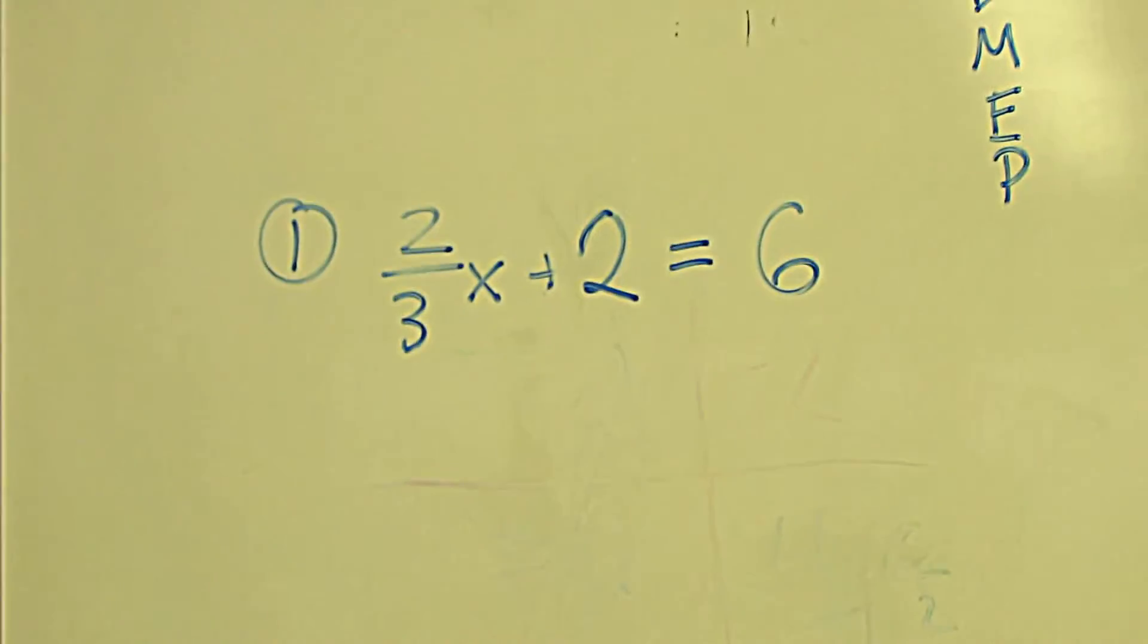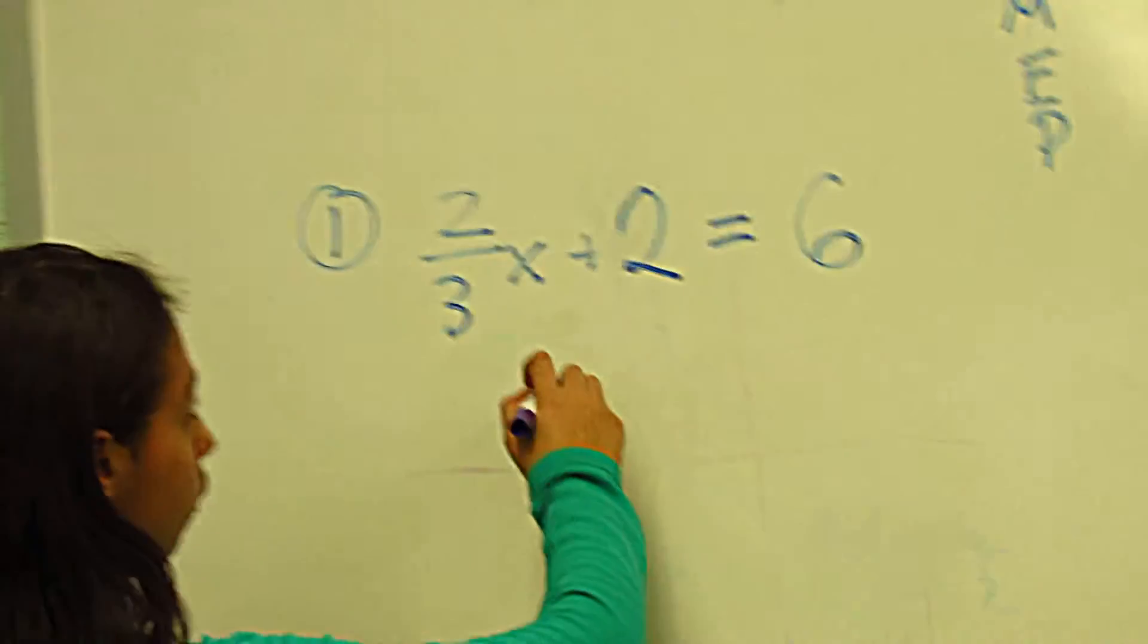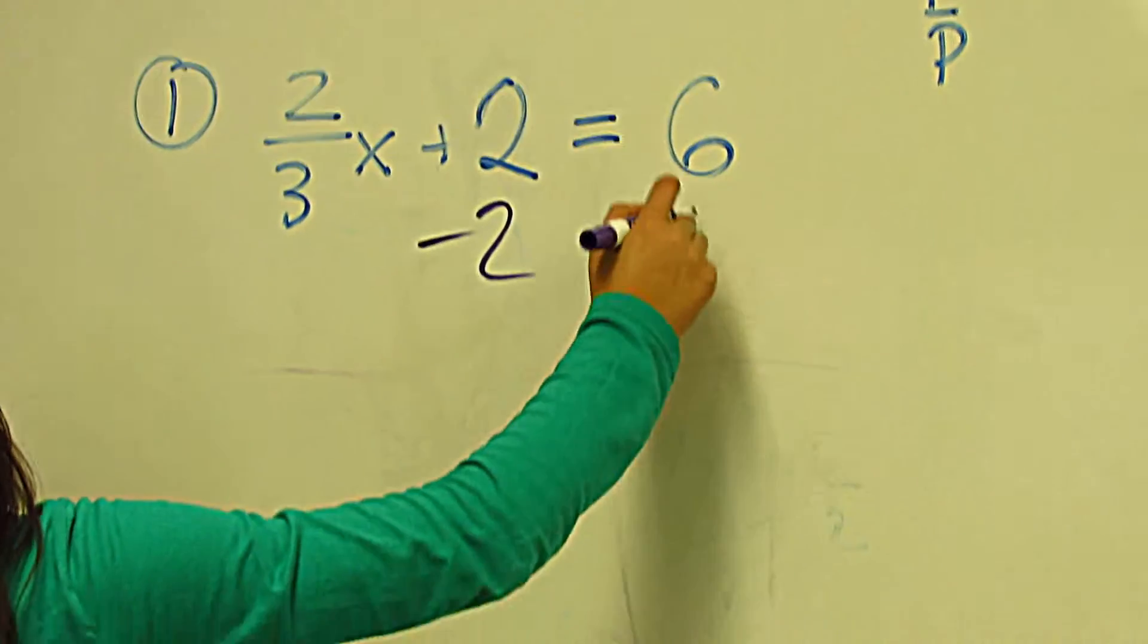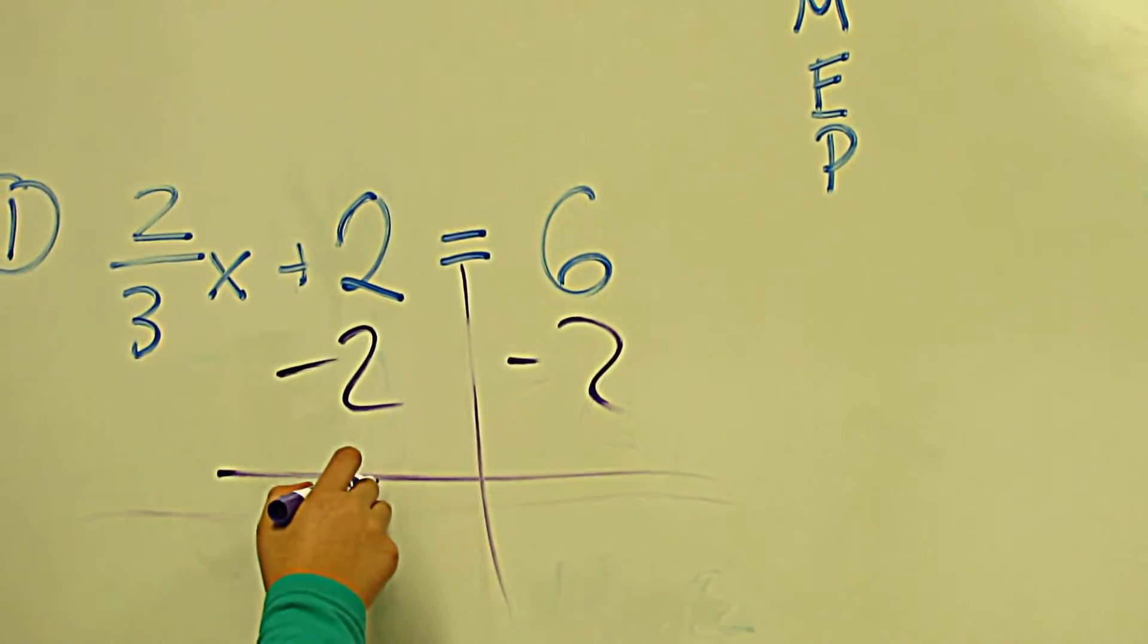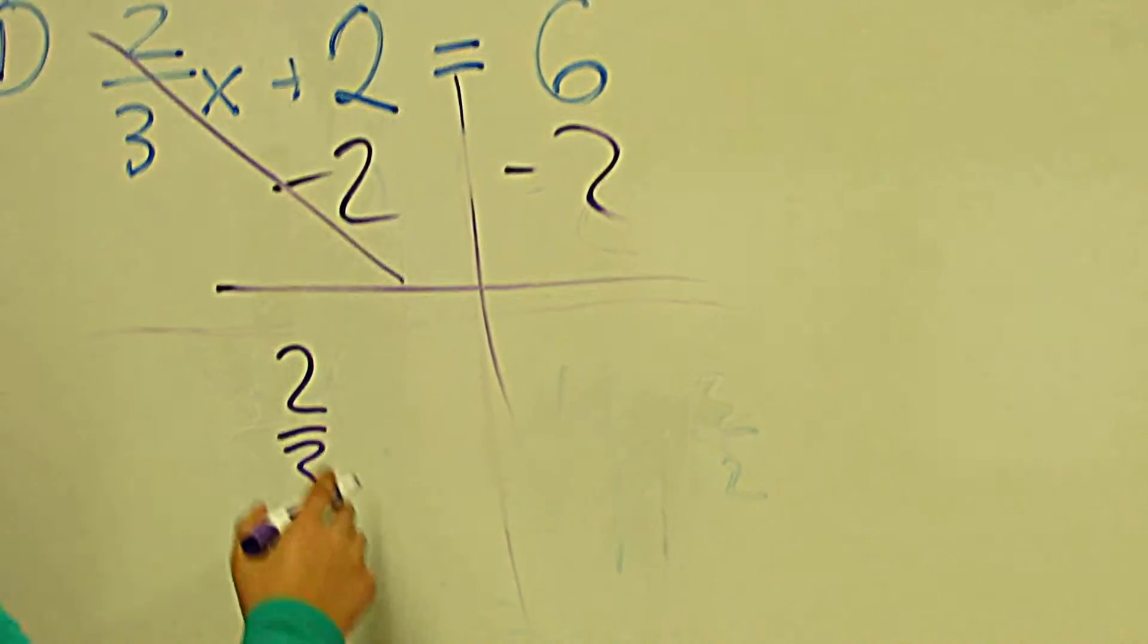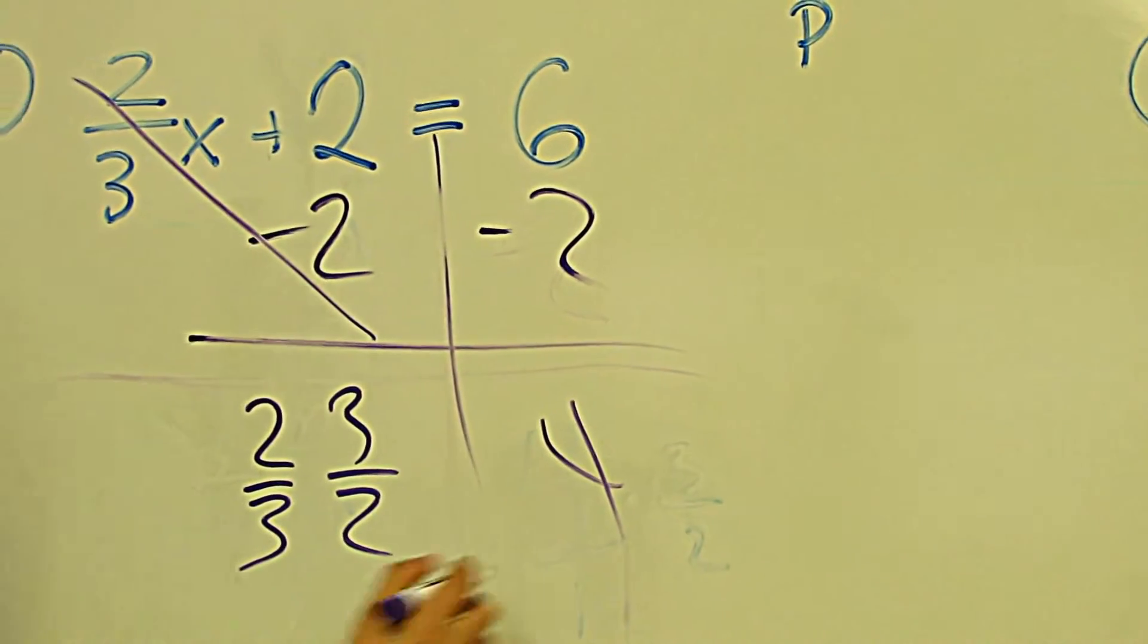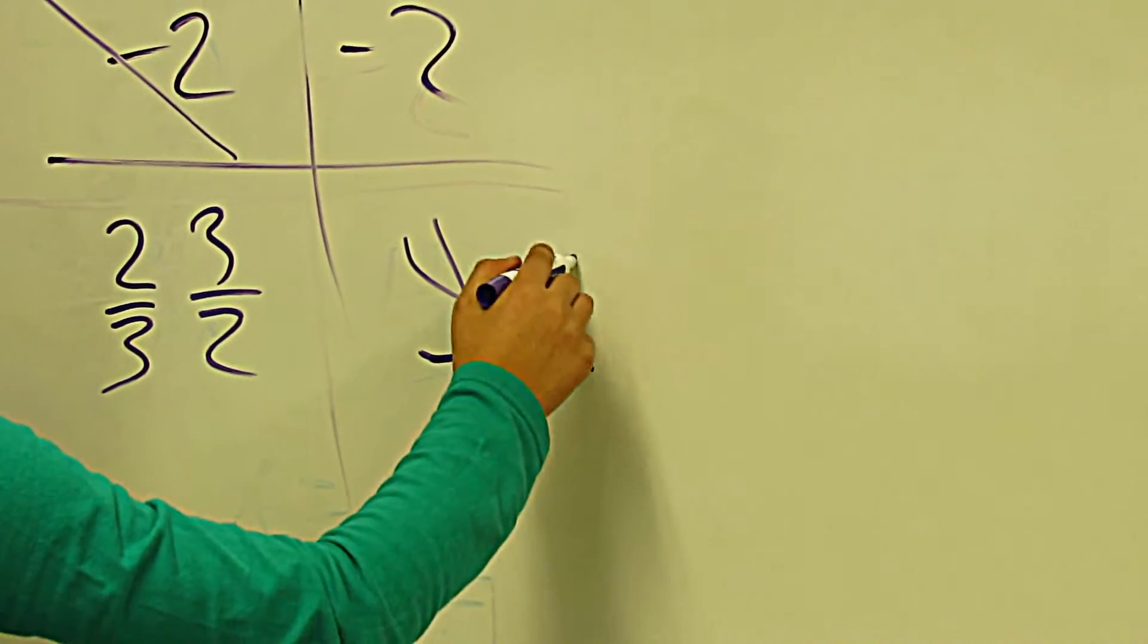First, you've got to do negative two on both sides, because we're doing a side map and we're going to start working backwards. This crosses out, that will be two over three. We're going to do a reciprocal, that will be three over two. This will be four, and then that will be four over one times three over two.